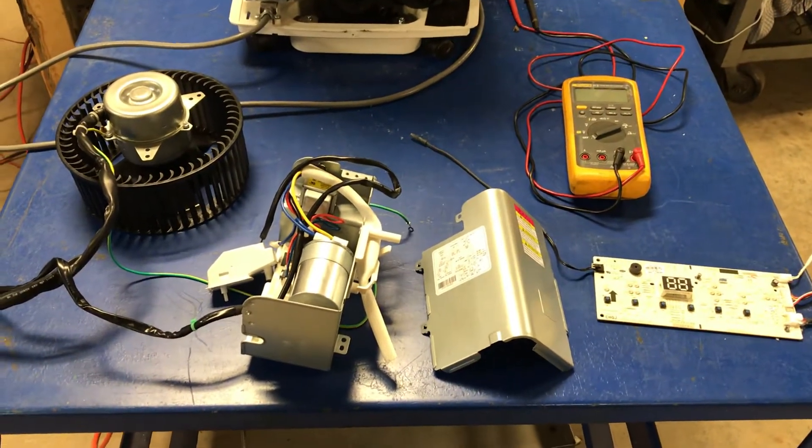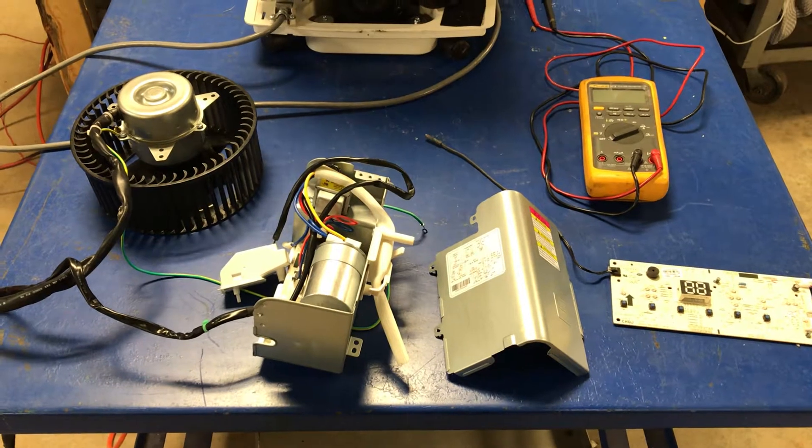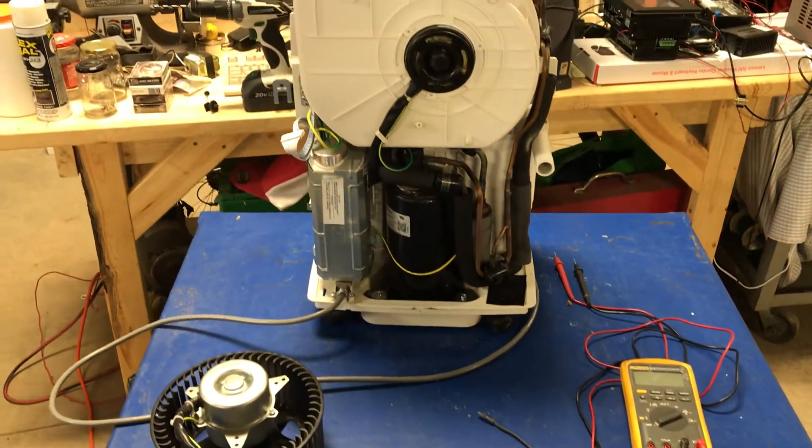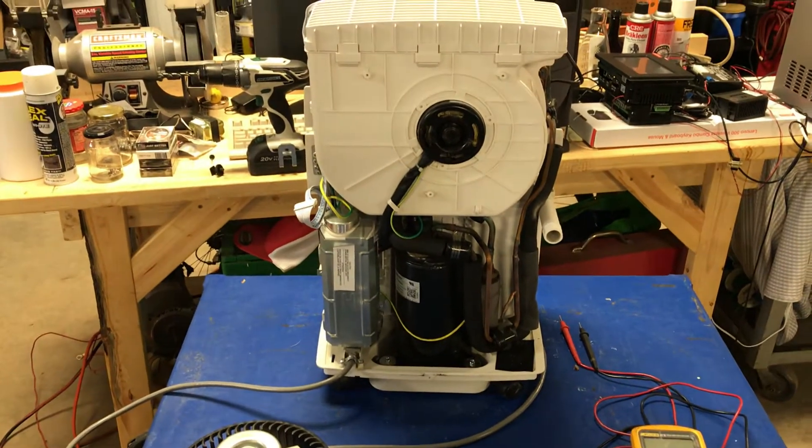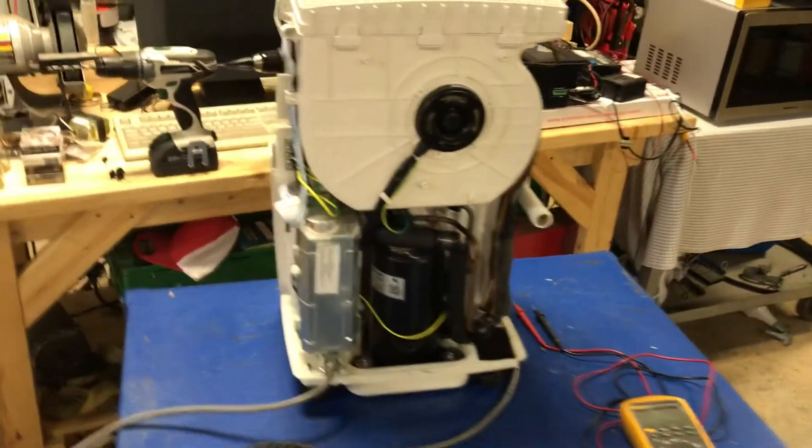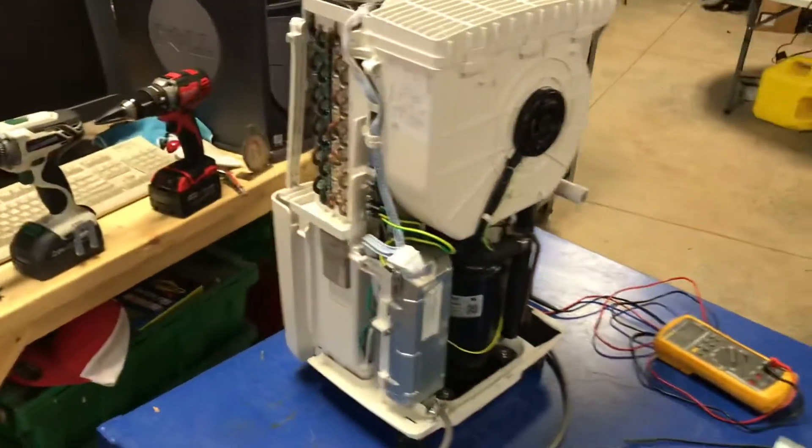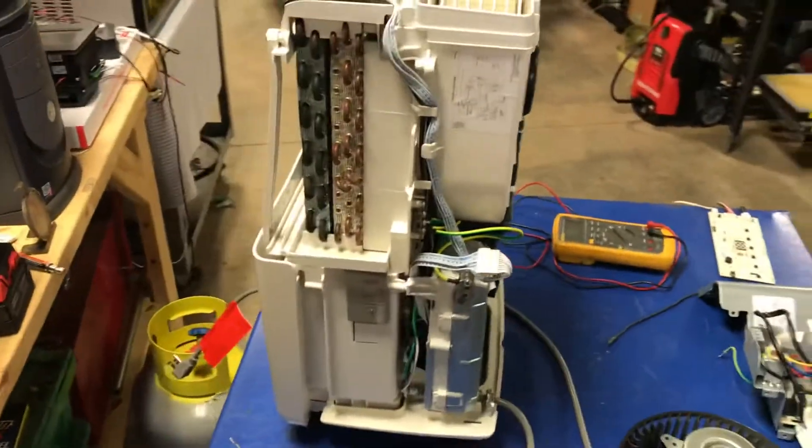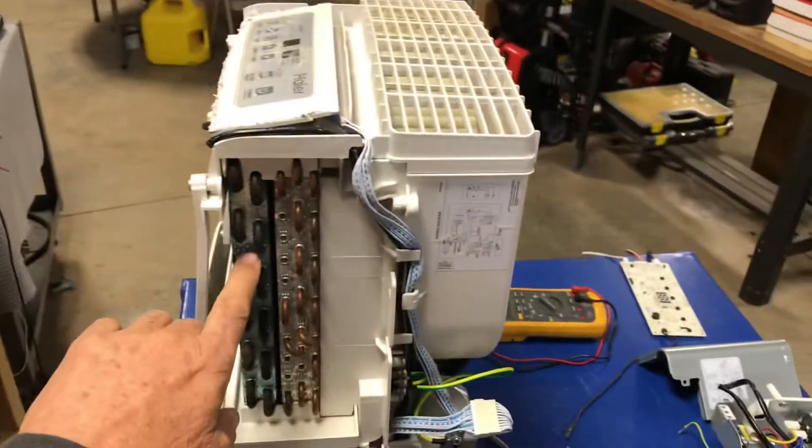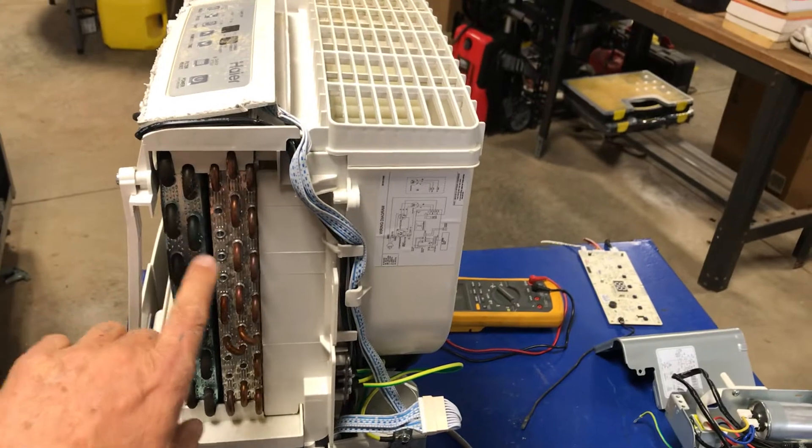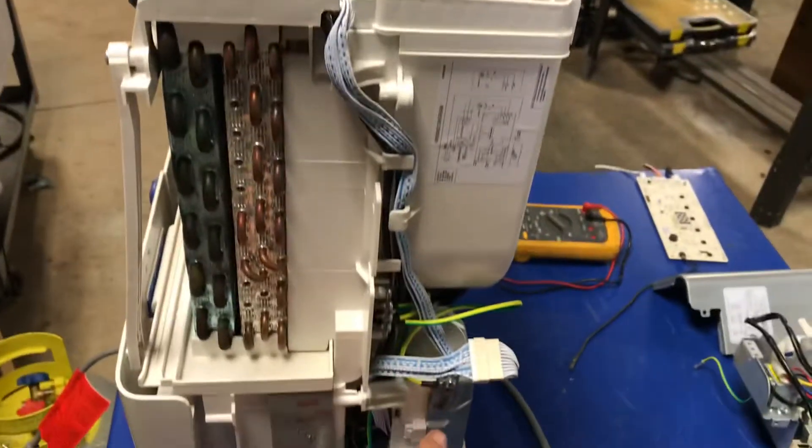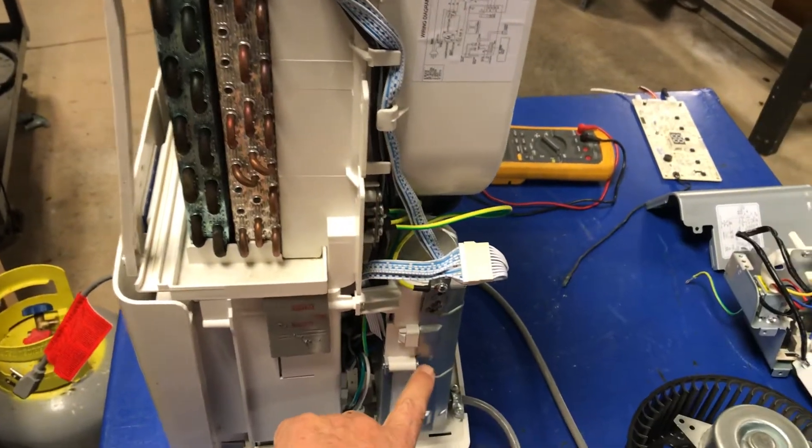Here on the table are some components from the dehumidifier that's pictured above. As you can see, I've simply taken the cover off. There's a condenser, an evaporator, and an electrical circuit box.